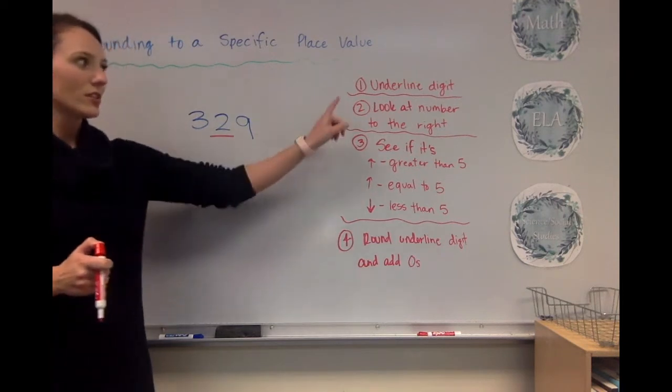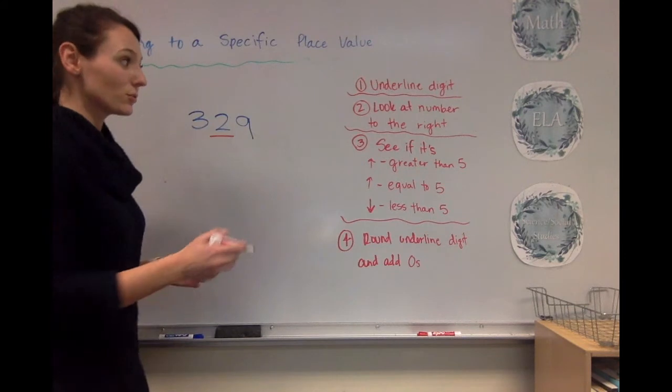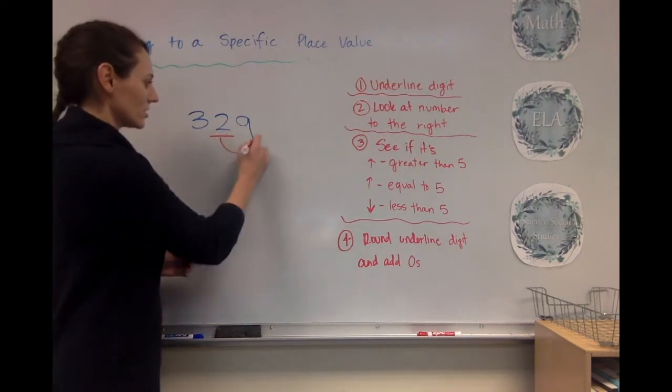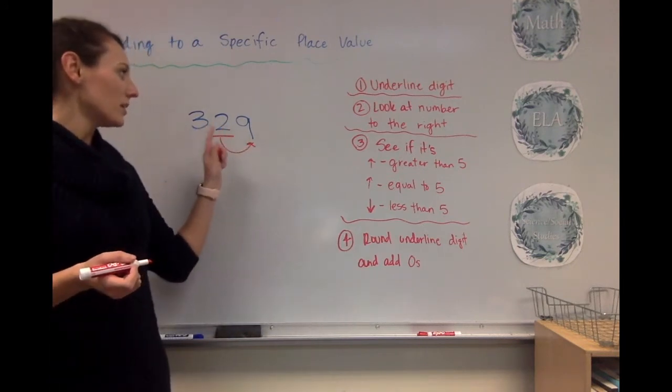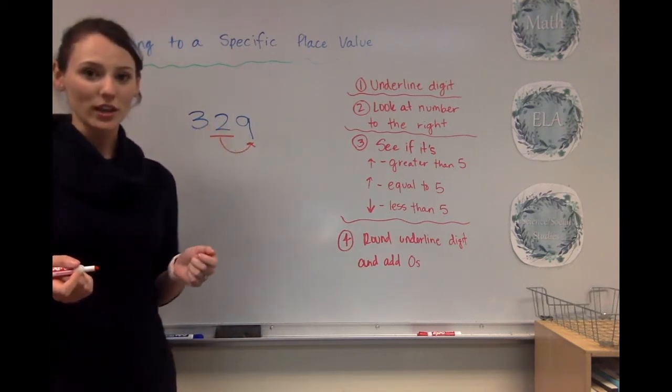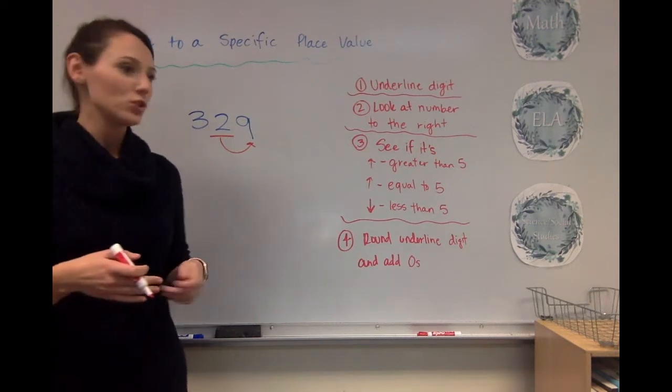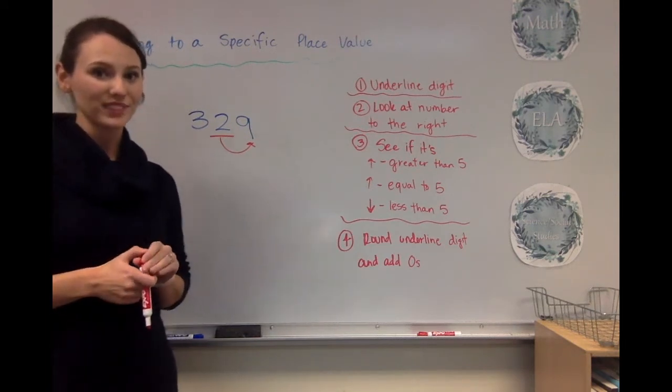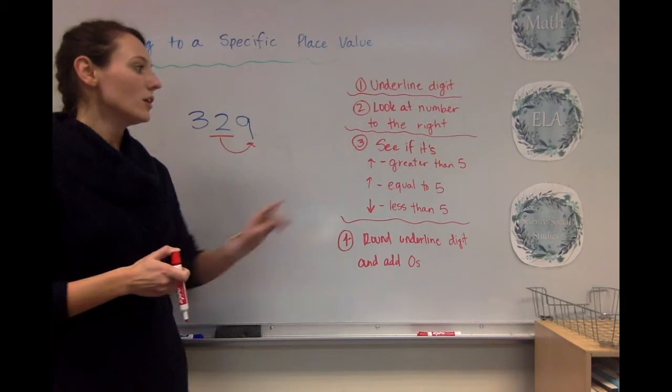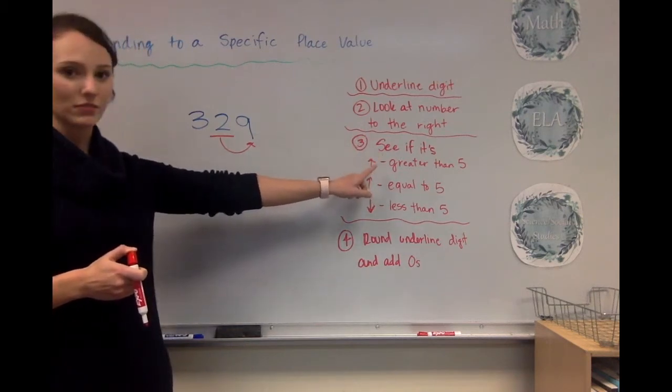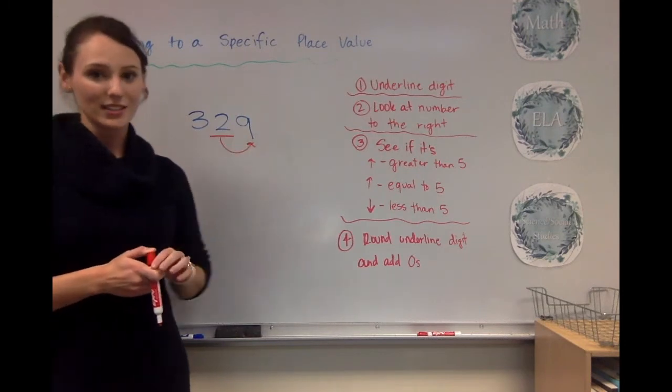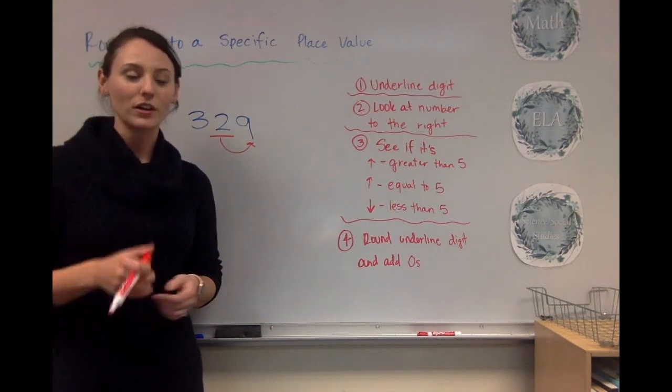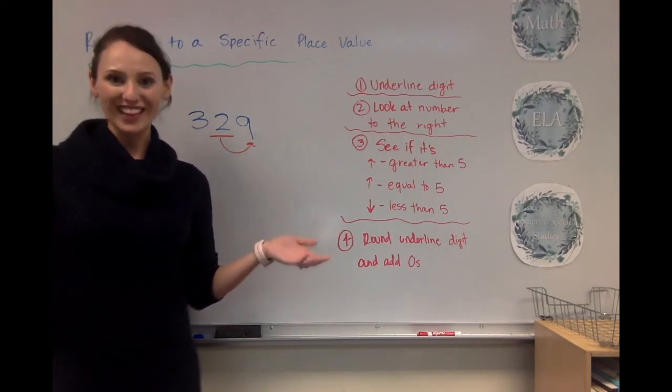Okay, so let's look at step number two. Look at the digit that's to the right, or look at the number that's to the right. So I draw my little arrow there, same step as before. This is the number that we're actually going to change, but how much we change it by is dictated by that number. Okay, let's keep going. So we're going to see if it's greater than five, equal to five, or less than five. So I see nine, that's obviously greater than five.